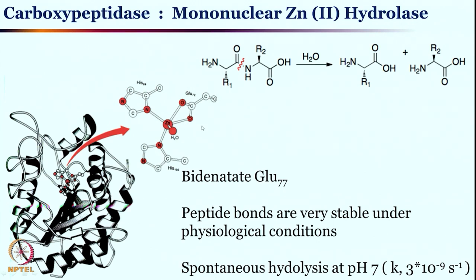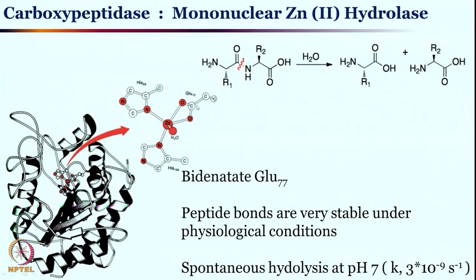Carboxylate residues like aspartate and glutamate can act as monodentate or, as seen here, as bidentate ligands. This switch in denticity from monodentate to bidentate is sometimes crucial to open up one coordination site for substrate binding. Depending on the need, this carboxylic acid side chain can be coordinated with the metal center in a monodentate or bidentate fashion. Spontaneous hydrolysis of such a peptide backbone is very slow, but this simple enzyme with zinc, 2 histidine, and 1 glutamate makes these reactions very facile.